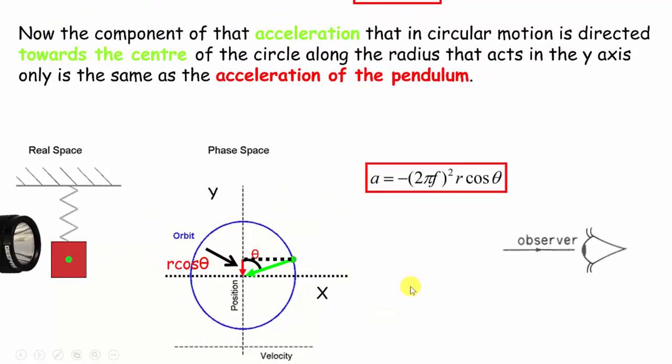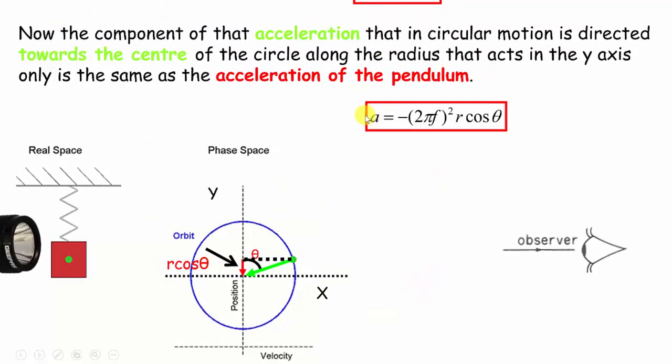That would be given to me by r cos θ. So I could say, take the acceleration, the green line, which is the same as the radius of the circle, given by this value, and multiply it by r cos θ, and I can have the value for the acceleration of the red block.